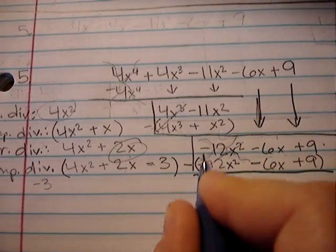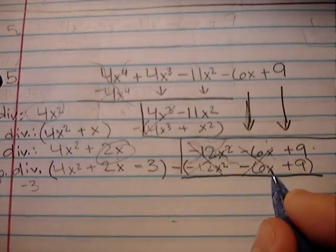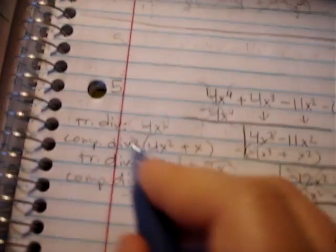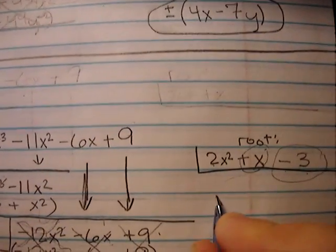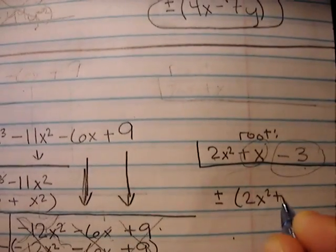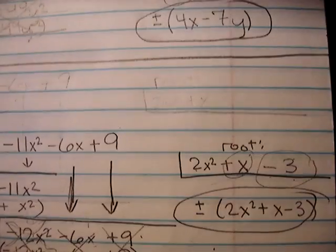That will cancel, same reason. And this will cancel. So everything is canceled. Our answer then is going to be plus or minus 2x squared plus x minus 3. How about that? All right.